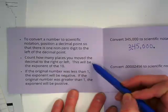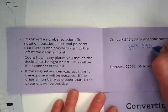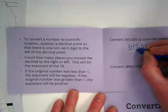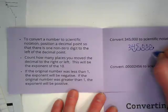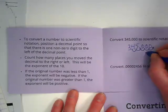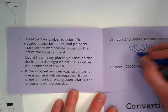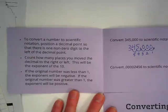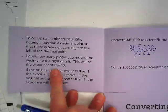Count how many places you move the decimal to the right or the left. Well, if I started here, I'm going to count how many places I moved it to get it to here. And that is one, two, three, four, five places. This will be the exponent of the ten.